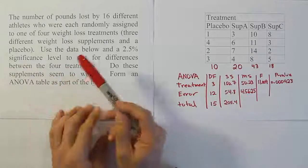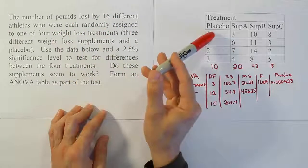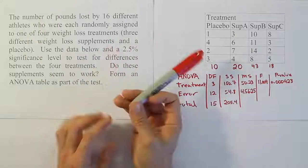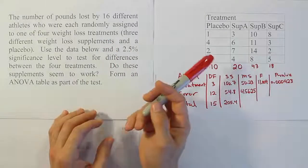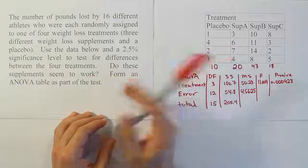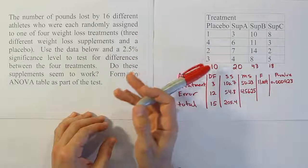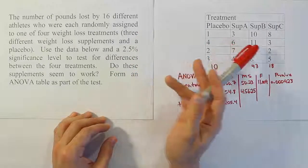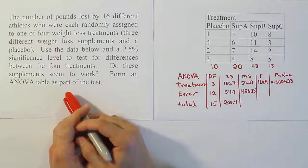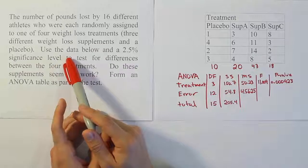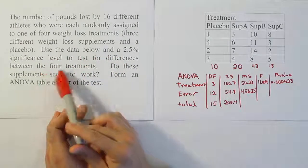In this problem, 16 different athletes were each randomly assigned to one of four treatments. So basically, what we have is a completely randomized design and we're testing to see how many pounds each athlete lost under the treatments. You have the placebo, which means they took a sugar pill, something that was fake, and then three kinds of supplements. We want to use this data and a two and a half percent significance level to test for differences between the four treatments.